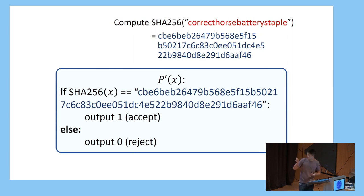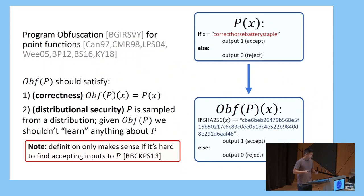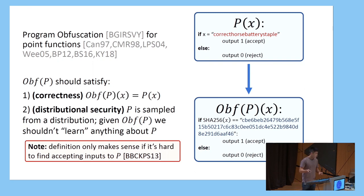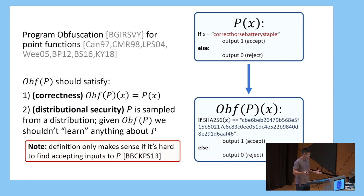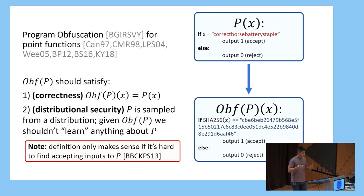What we just saw was actually a really simple example of program obfuscation for the limited class of point functions. We had some insecure implementation of a point function, and by just taking the hash, we created a new program that's a heuristic obfuscation of this point function. The correctness of the program is preserved — the input-output behavior is essentially the same — but this new program has a more secure implementation.